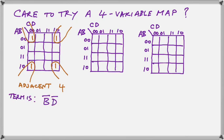Those four are B-bar D-bar, because all four squares have B as a zero and D as a zero. Check it out for yourself.